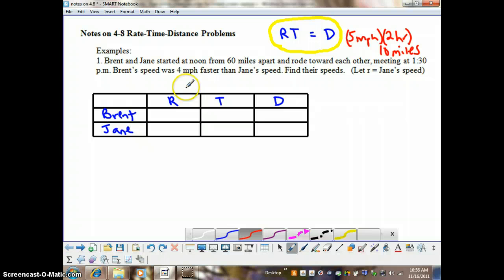Well, here we have a situation where we have two people, Brent and Jane. They're starting at noon, 60 miles apart. So, Brent is going this way, and Jane is going this way. And their total distance is 60 miles. So, they're 60 miles apart in total.